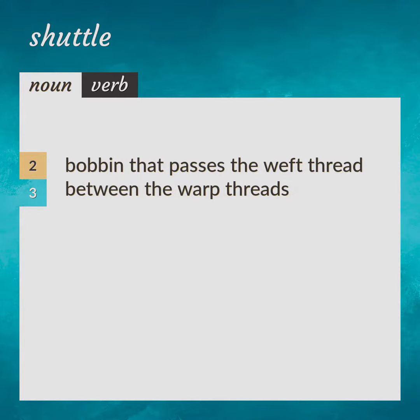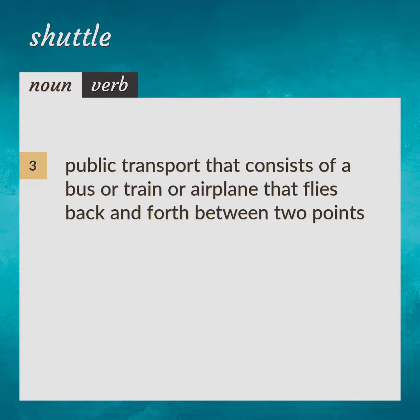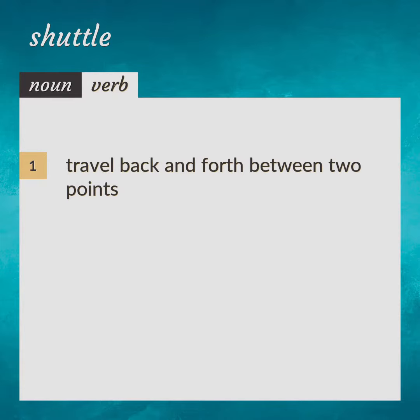Bobbin that passes the weft thread between the warp threads. Also, public transport that consists of a bus, train, or airplane that flies back and forth between two points. To travel back and forth between two points.